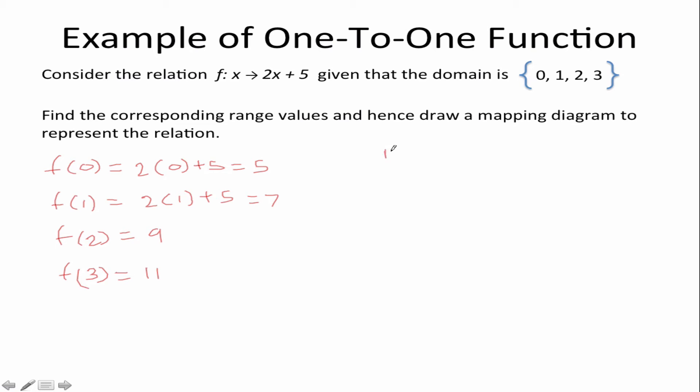Domain 0, 1, 2, 3. Range. All right so our mapping diagram is as follows: you have direct connection between your domain and your range.